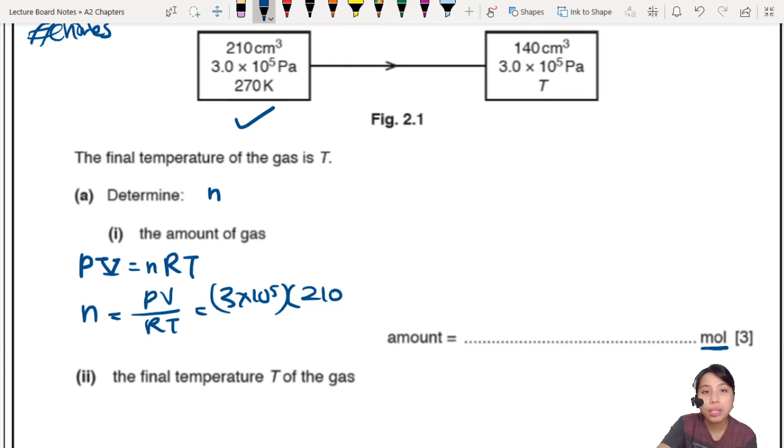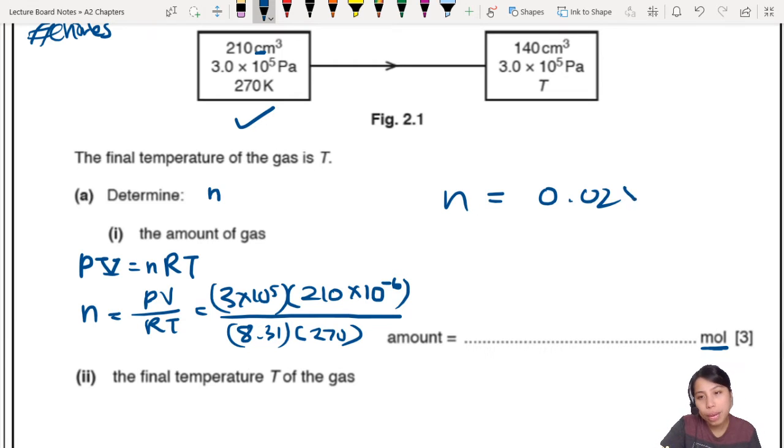Pressure, I mean, you could choose this state, because we know most information about it. You can't choose this one on the right, because we don't know temperature. So we can't find our moles. So let's do this first. 3 times 10 to the 5 times volume, which is 210. Oh, centimeter cubed. Be careful. You need to convert that to meter cubed, which will be times 10 to the negative 6 meter cubed. So R is 8.31. T is 270. So that will give you, or give me, a value of N, which is about 0.0281.